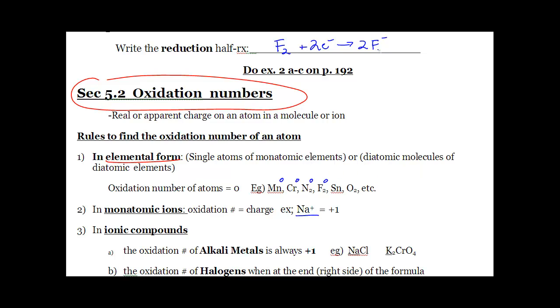If the charge is given, then you just pretend that they're not lying to you. So if you have something like calcium plus two, well then oxidation number is plus two. Don't think they're lying and saying oh it must be plus three. So if it's given, just use it.